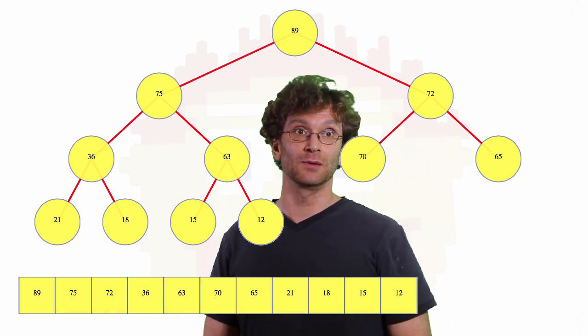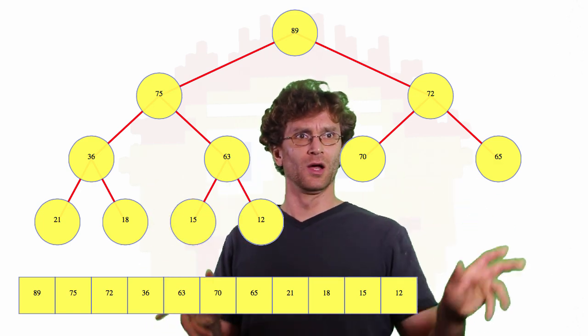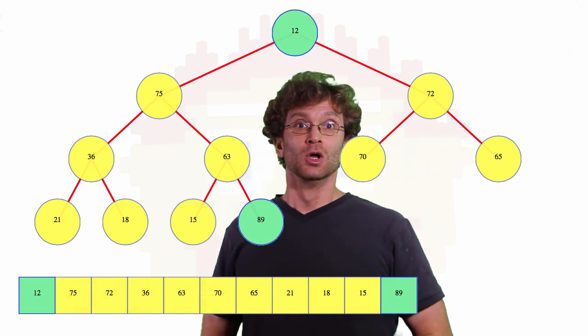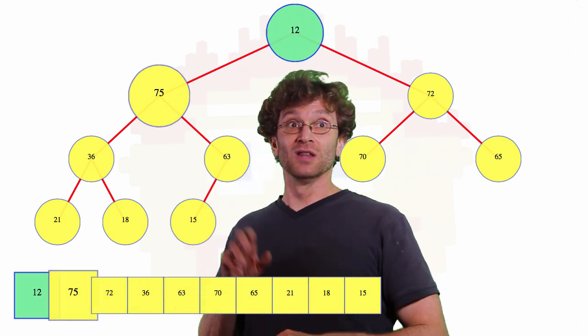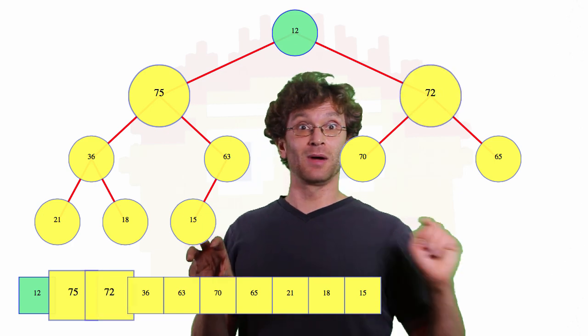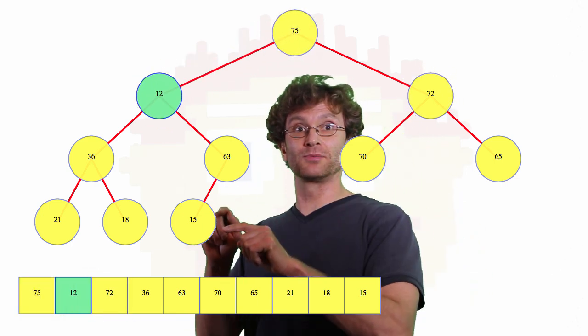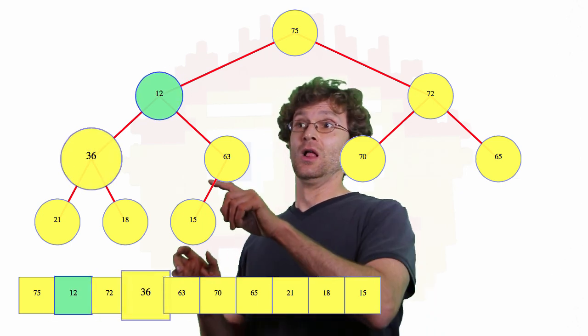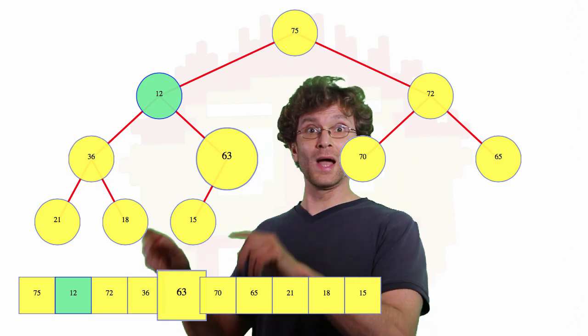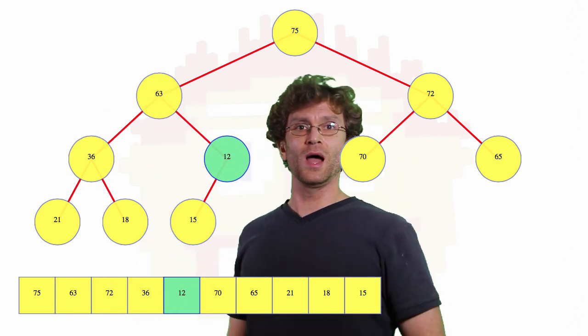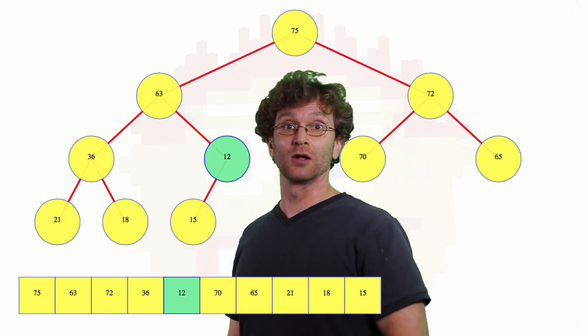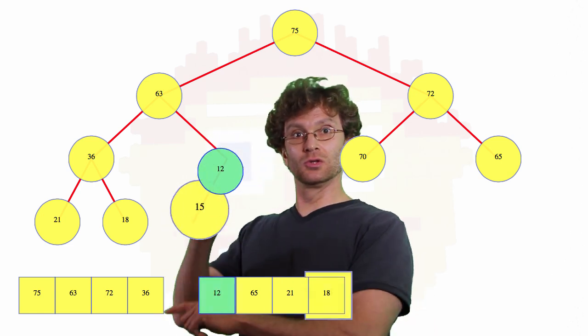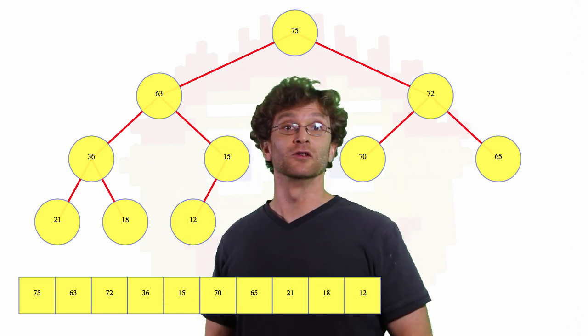Let's do one more example there. This time, I won't draw the sub heaps as we go, so we're going to swap 12 up to the root. 12 compares to the left, the left is bigger, the left compares to the right, the left is still bigger, we swap down to the left, then we compare to the left, the left is larger, then we compare the left to the right, the right is larger, we swap down to the right, now we're going to compare 12 to its one and only child, 15. 15 is bigger, so we're going to do that last swap, and we finish because now we're in a leaf position.